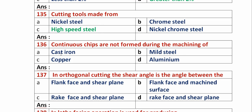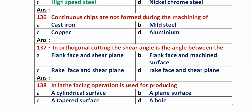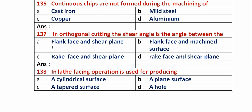Question 136: Continuous chips are not formed during the machining of? Option A: cast iron. Option B: mild steel. Option C: copper. Option D: aluminum. Continuous chips are not formed while machining cast iron because it is a brittle material. So option A, cast iron, is the right answer.